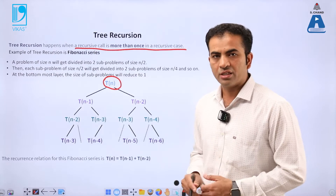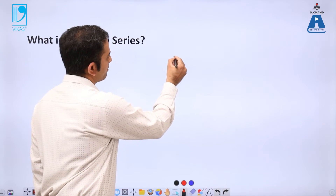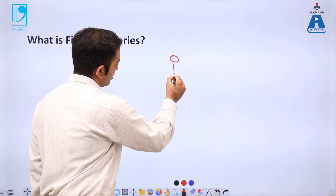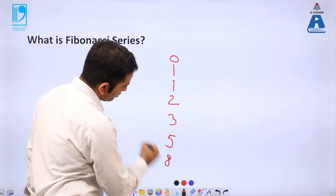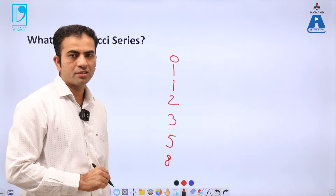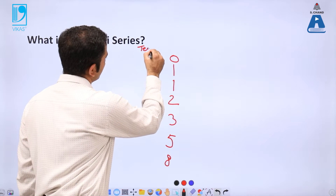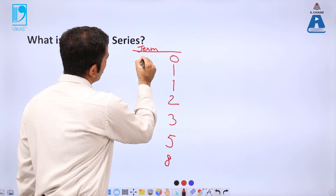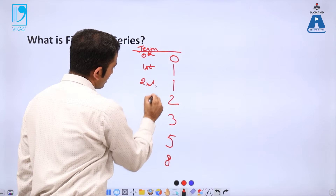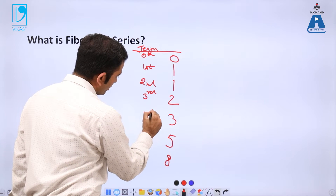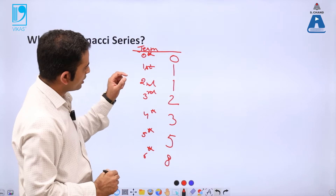Let's understand the concept of tree recursion with the help of the Fibonacci series. The Fibonacci series is: 0, 1, 1, 2, 3, 5, 8, and so on. If we label the terms, this is the 0th term, the 1st term, the 2nd, 3rd, 4th, 5th, 6th, and so on.